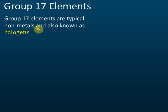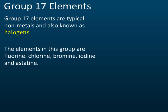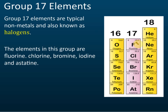Group 17 elements are typical non-metals. Before this we discussed group one, which are metals, but group 17s are non-metals and they are known as halogens. The elements in group 17 are fluorine, chlorine, bromine, iodine, and astatine. You need to memorize the first four — astatine is less important. What's important is fluorine, chlorine, bromine, and iodine.